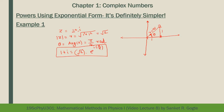Now we find z^8: (√2)^8 · e^(i·8·π/4) = 16 · e^(i·2π). So z^8 = 16·e^(i2π) in exponential form, where the modulus is 16 and the argument is 2π.